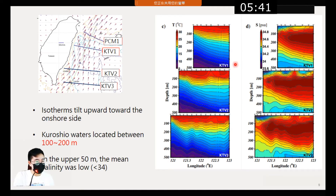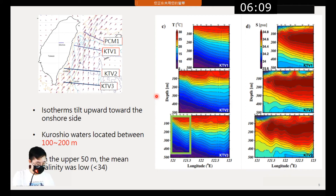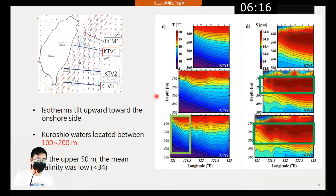This is the mean temperature and salinity figure. In the temperature figure, we can see the isotherms tilted upward toward the onshore flank of the Kuroshio, which is typical of hydrographic transects of geostrophic currents. In the salinity diagram, the salinity maximum indicating Kuroshio waters is located between 100 and 200 meters depth. We can also see the mean salinity was very low in the upper 50 meters.